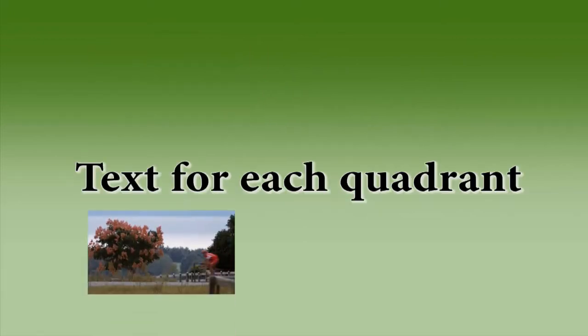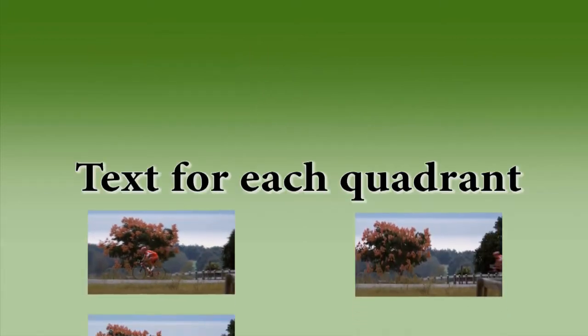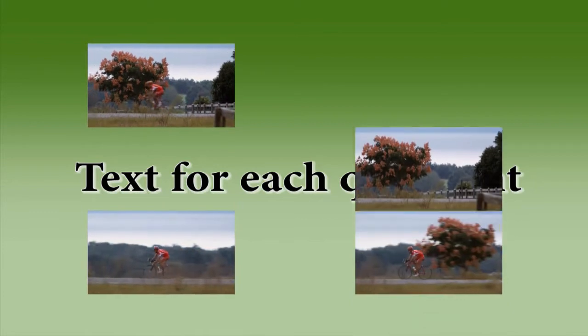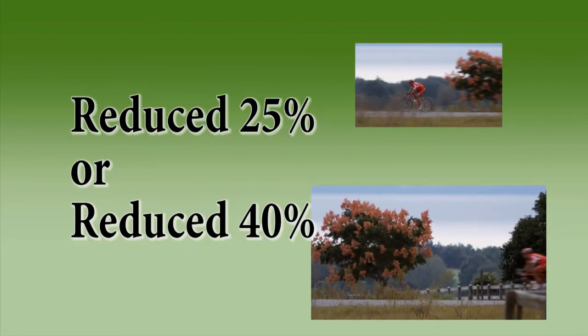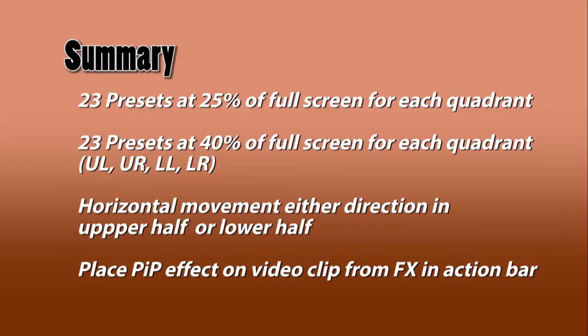So that's a summary. We can use this for any of the four quadrants, and we can use the 25% default or the 40% default. You have 23 presets at 25% for each quadrant on screen and 23 at 40%. You can move horizontally in either direction in the upper half or lower half. To apply the PIP, you place it on top of the clip.